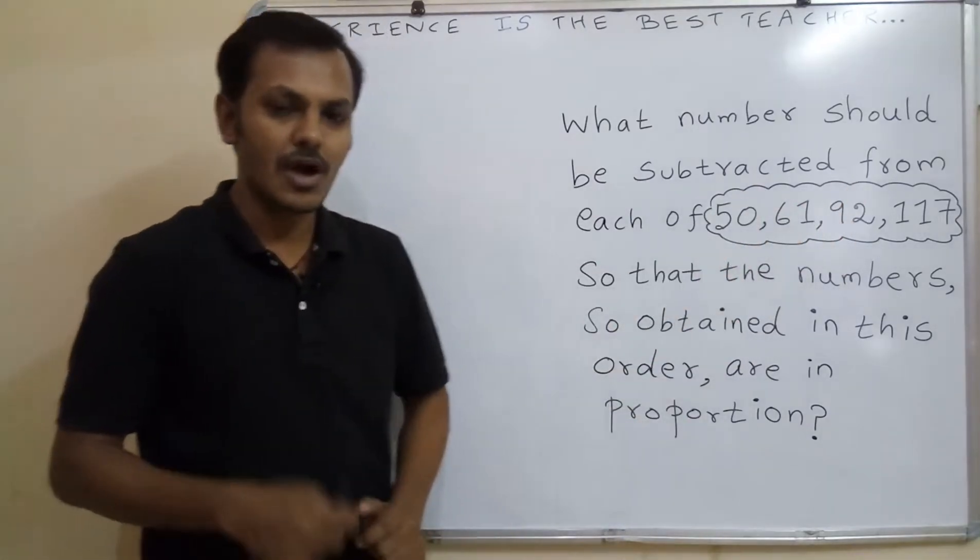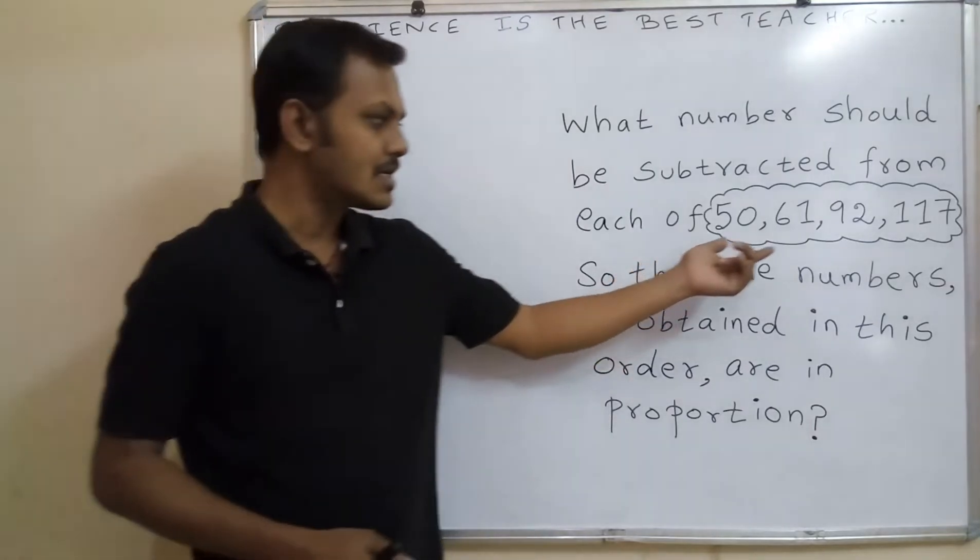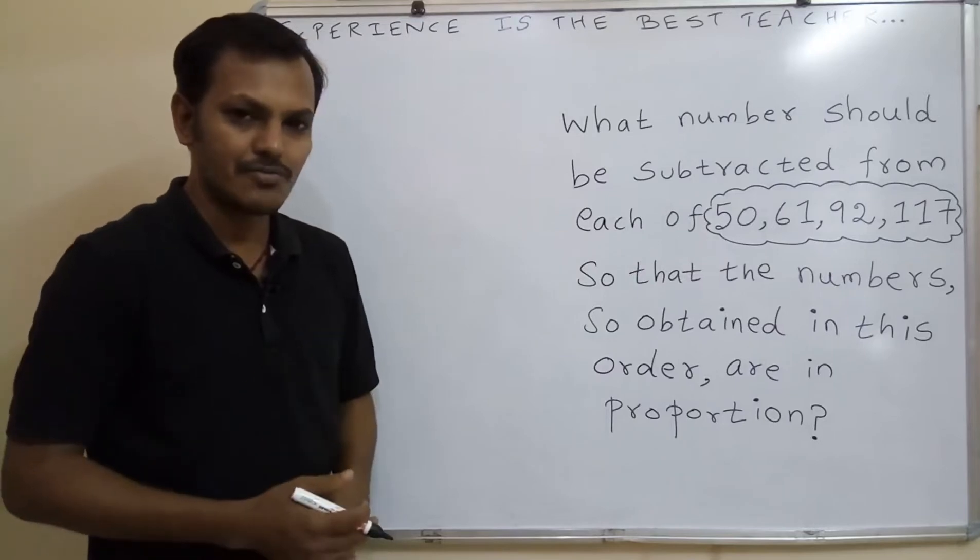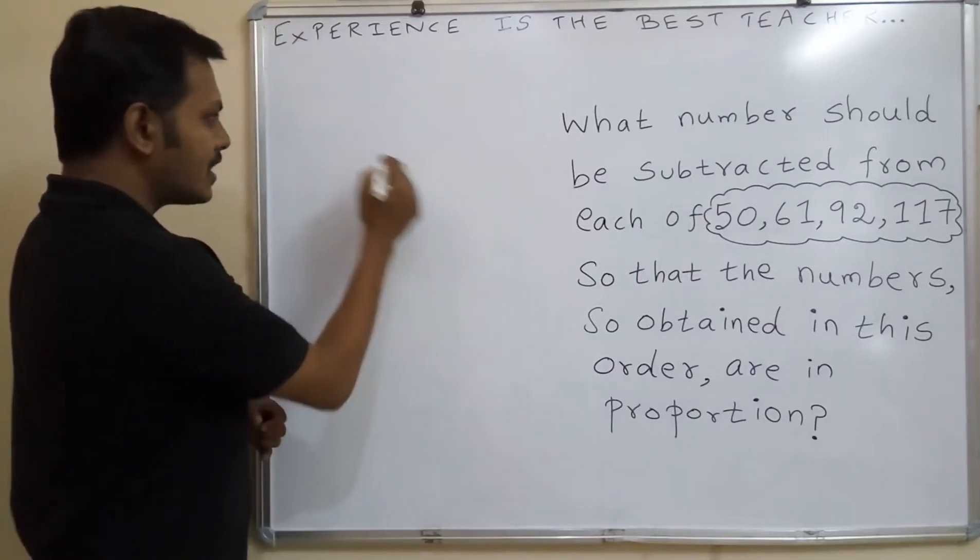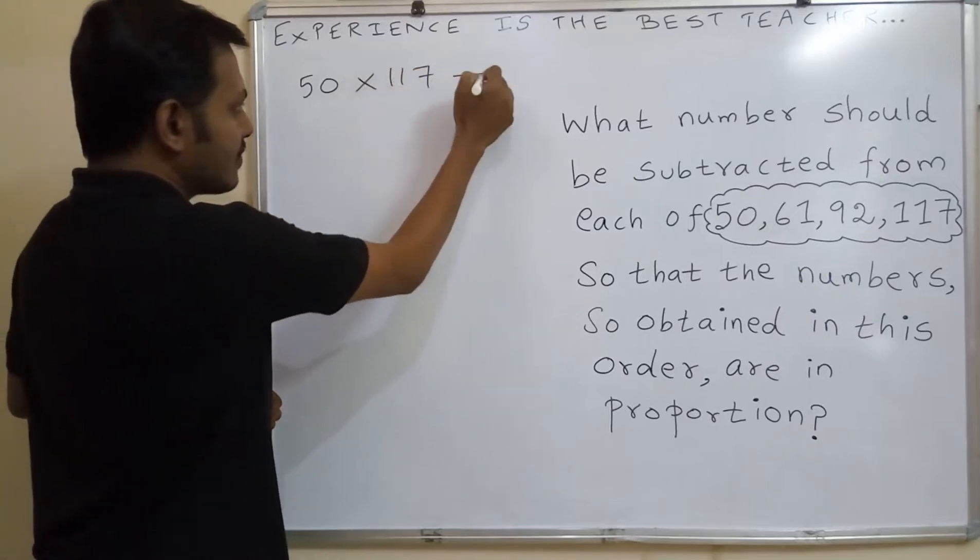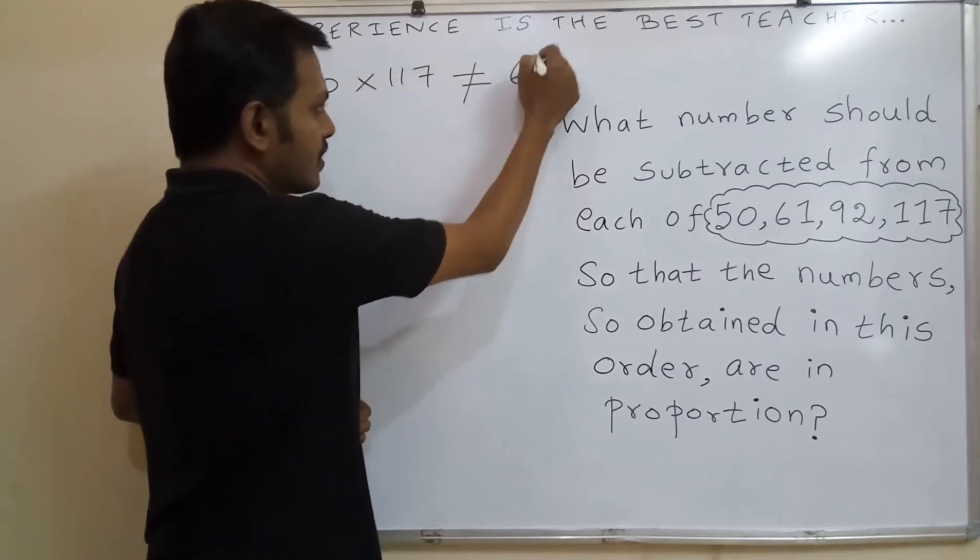That means this is not in proportion. So after you separate one number from each of this, you will get the proportion. First you write the product of extremes which is equal to product of means. That formula: 50 into 117, which is not equal to 61 into 92.